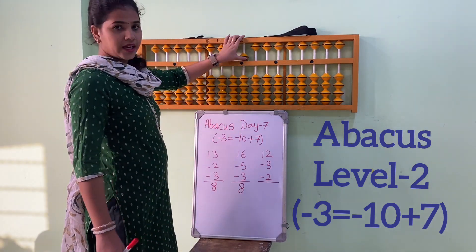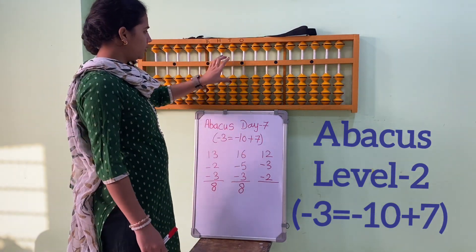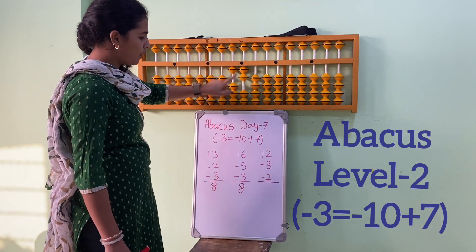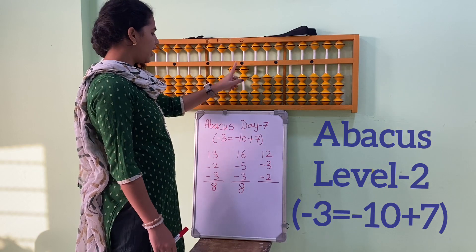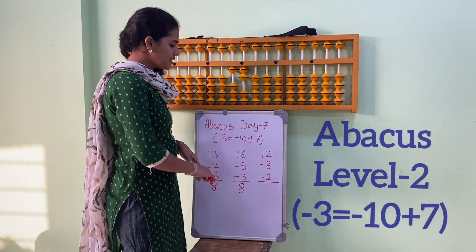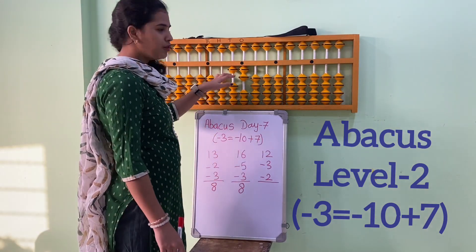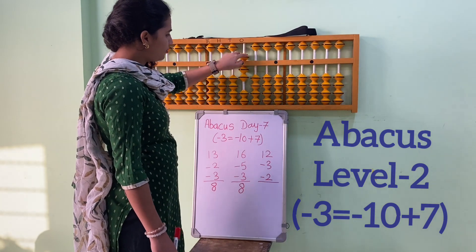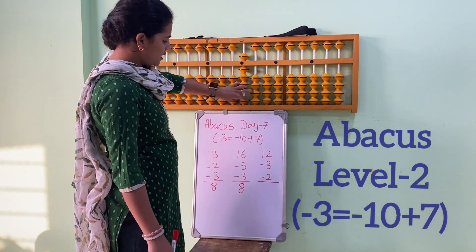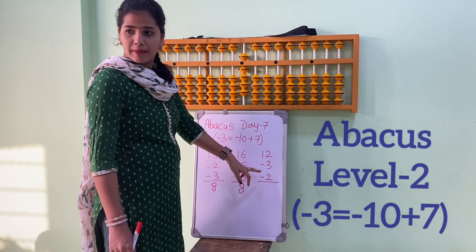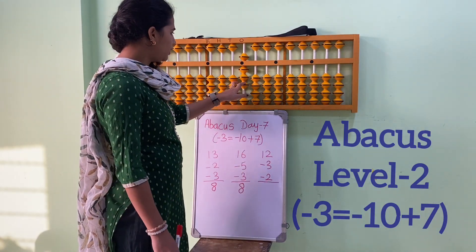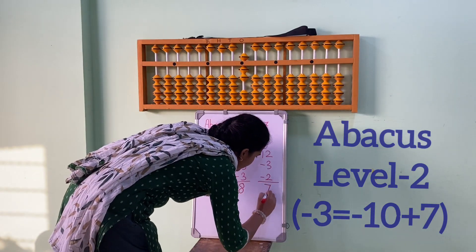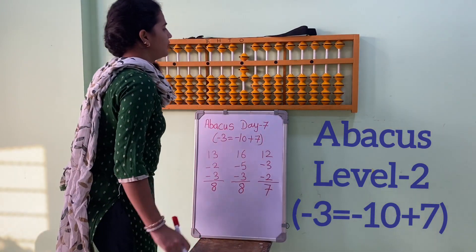Let's see another sum. 12. In 10's place we have 1, in 1's place we have 2. Abhi hum minus 3 karenge. So minus 3 ka humara kya formula hai? Minus 10 plus 7. 5, 6, 7, minus 2. 1, 2. So the answer is 7.